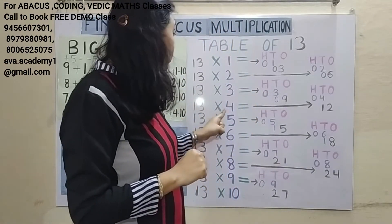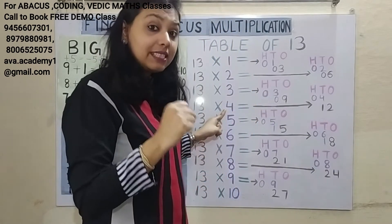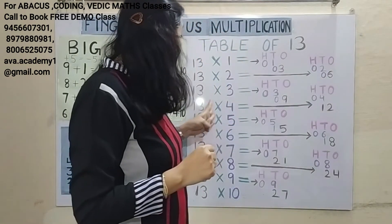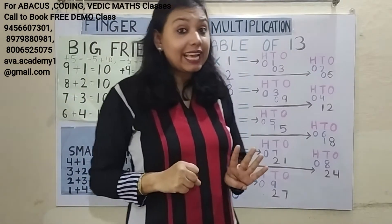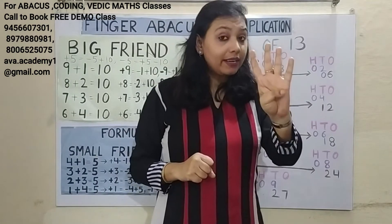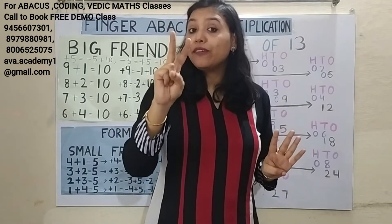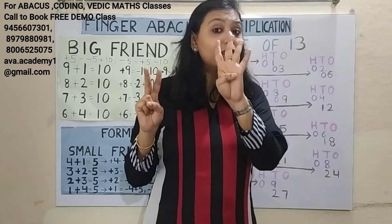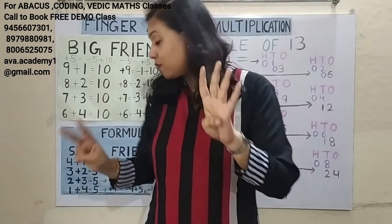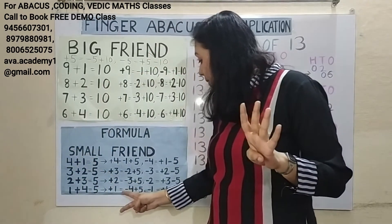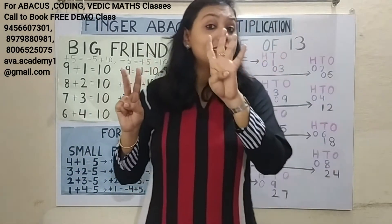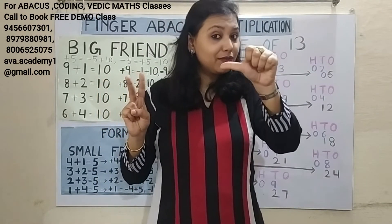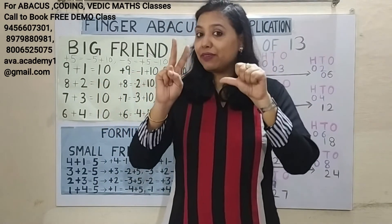Next, 1 four is 4. In 100s: 0. In 10s: 4. 3 fours are 12. In 10s: 1. In 1s: 2. We can easily add the 2, but in 10s we need to add 1. The plus 1 formula is minus 4 plus 5. So the plus 10 formula is minus 40 plus 50. Answer will be 52.